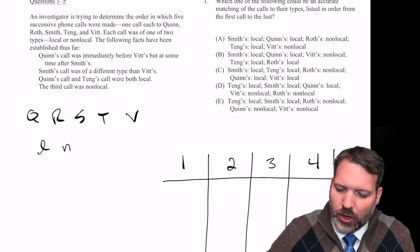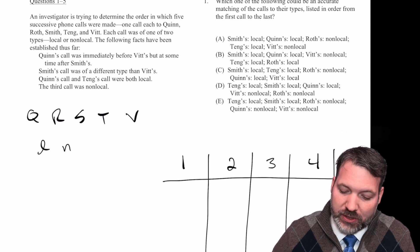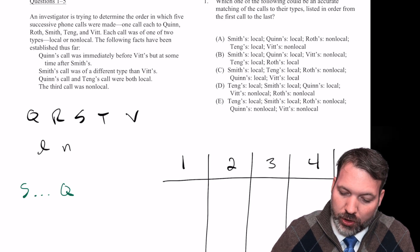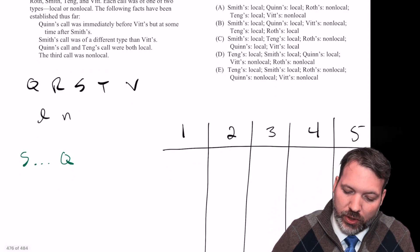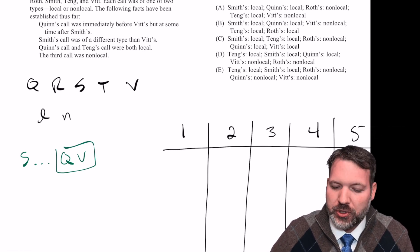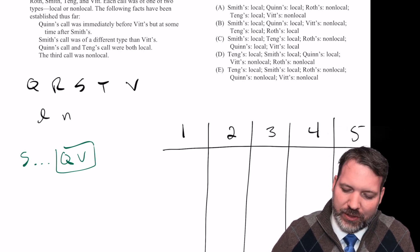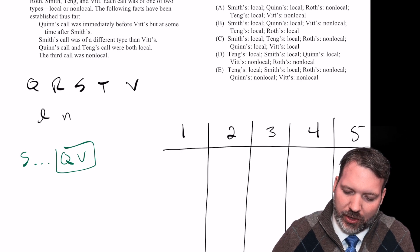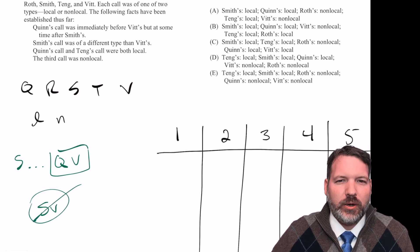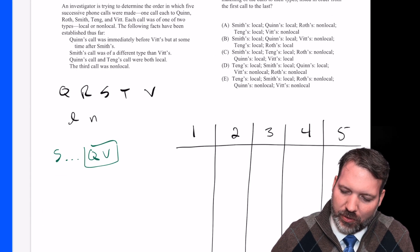Quinn's call was immediately before Vitt's, but at some time after Smith's. So two pieces of information here: Smith dot dot dot Q is our order clue here. But then we also have this blocking clue. Q was immediately before V. We can combine those if we want. We could keep them separate. No special reason we have to do it either way. Smith's call was of a different type than Vitt's. So I'm going to do something a little strange here. I was going to say I'm going to do a lowercase s and v with a circle and a slash through like this. But the problem is a lowercase s and v look the same as an uppercase s and v.